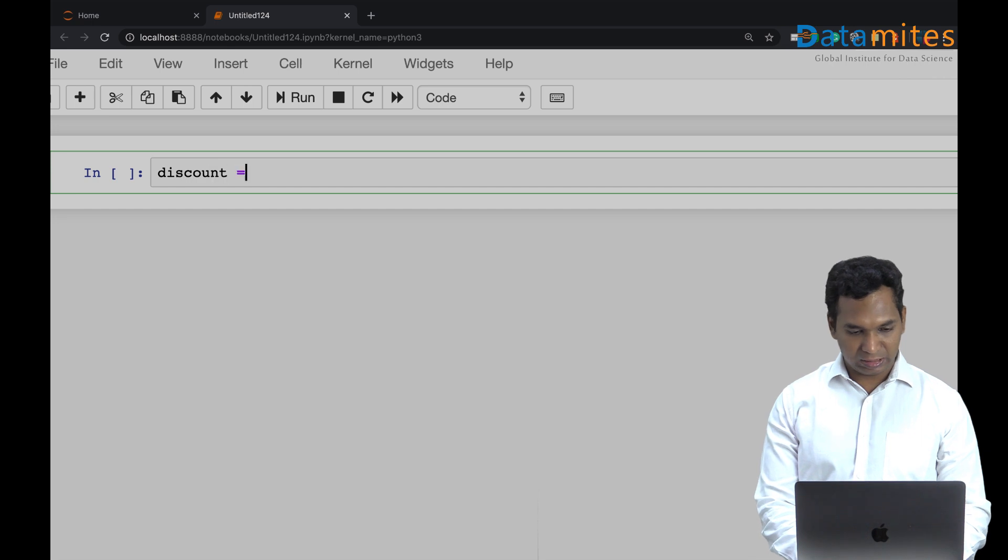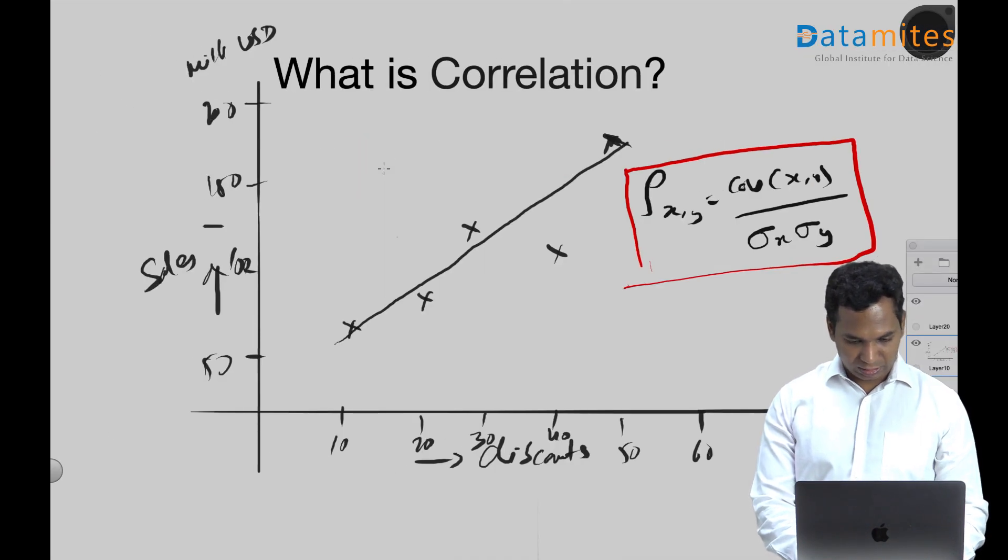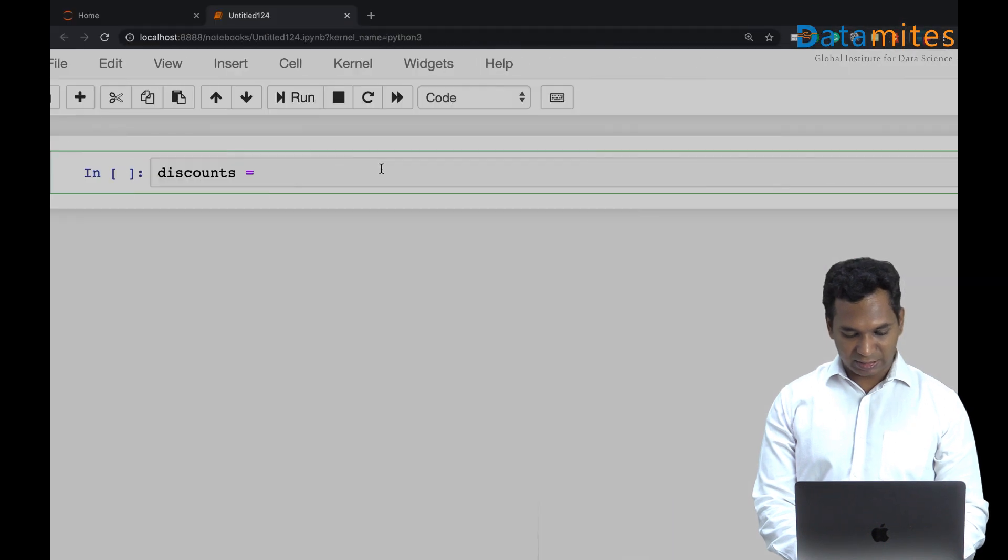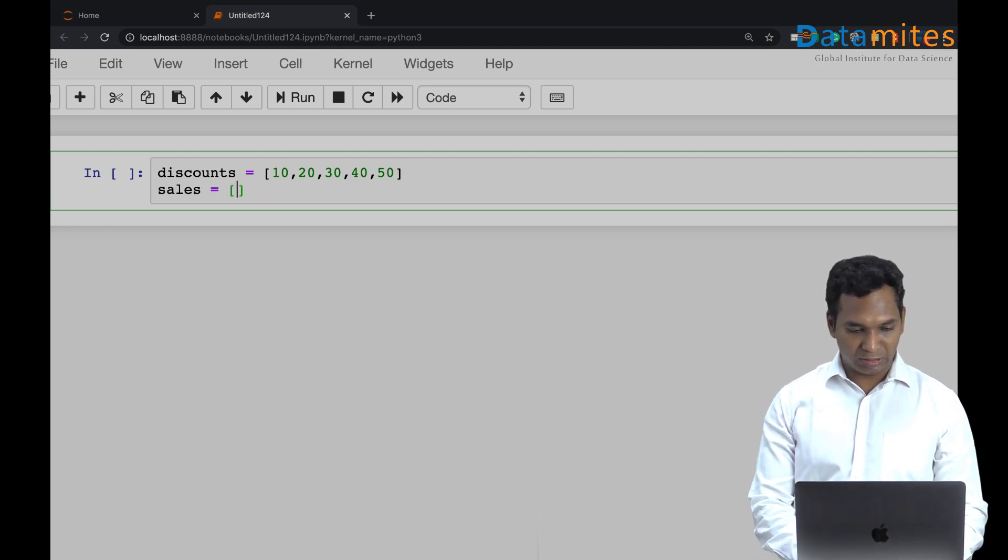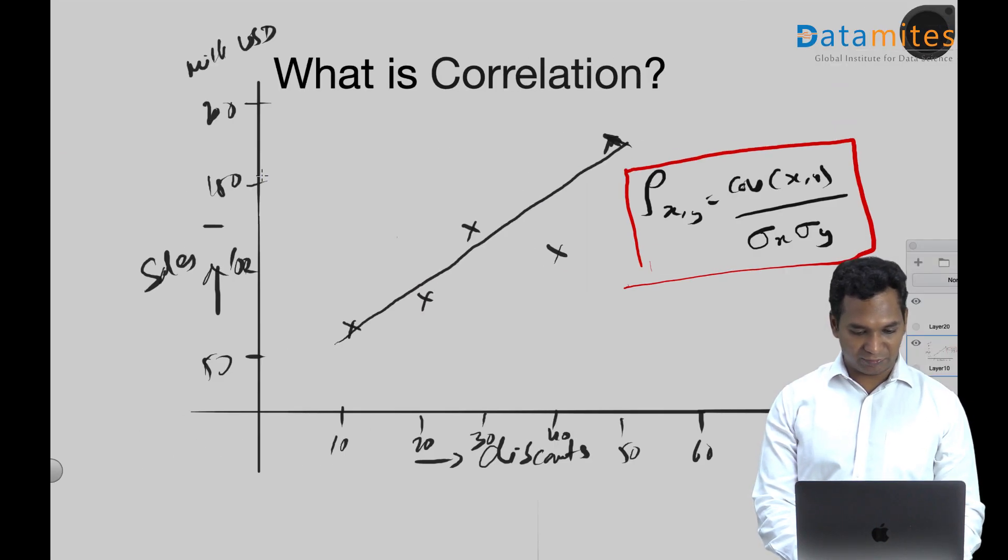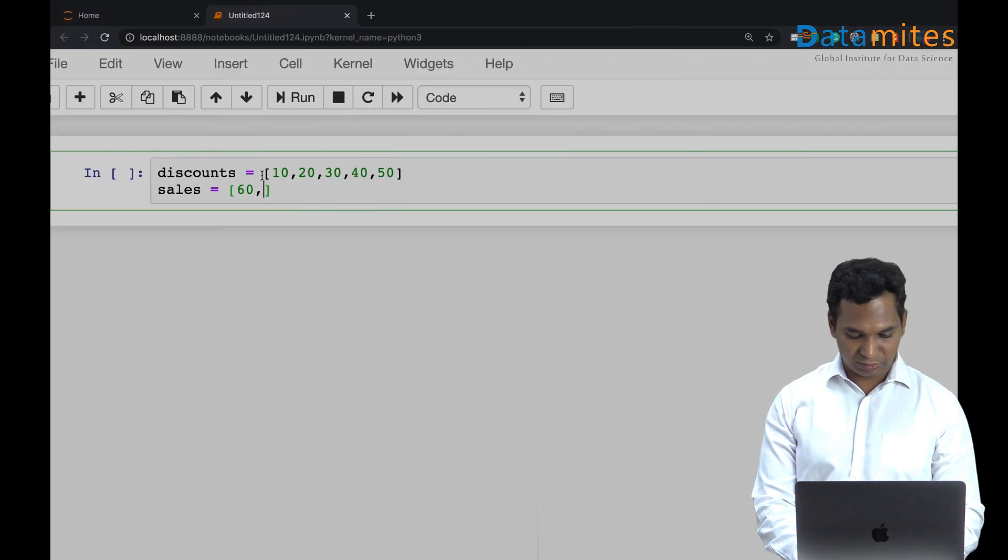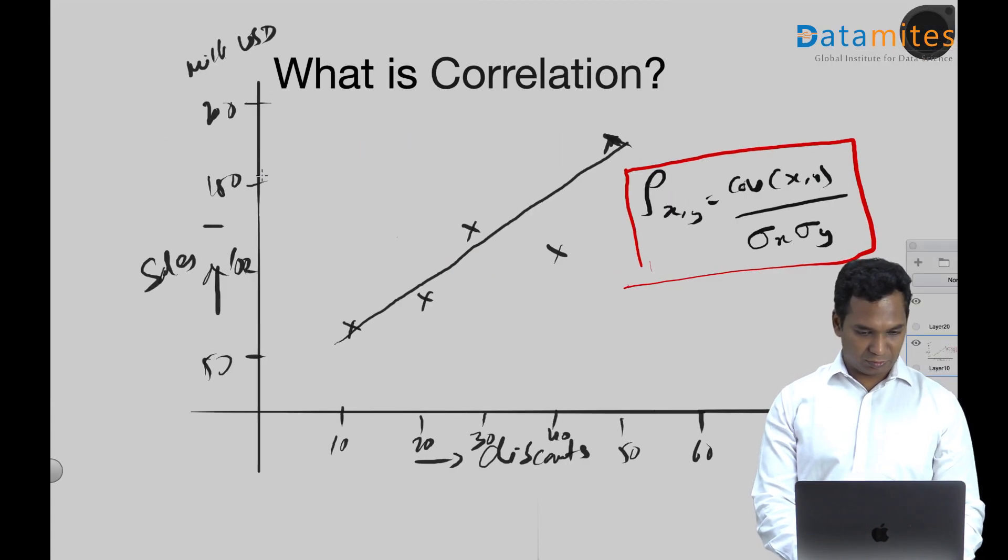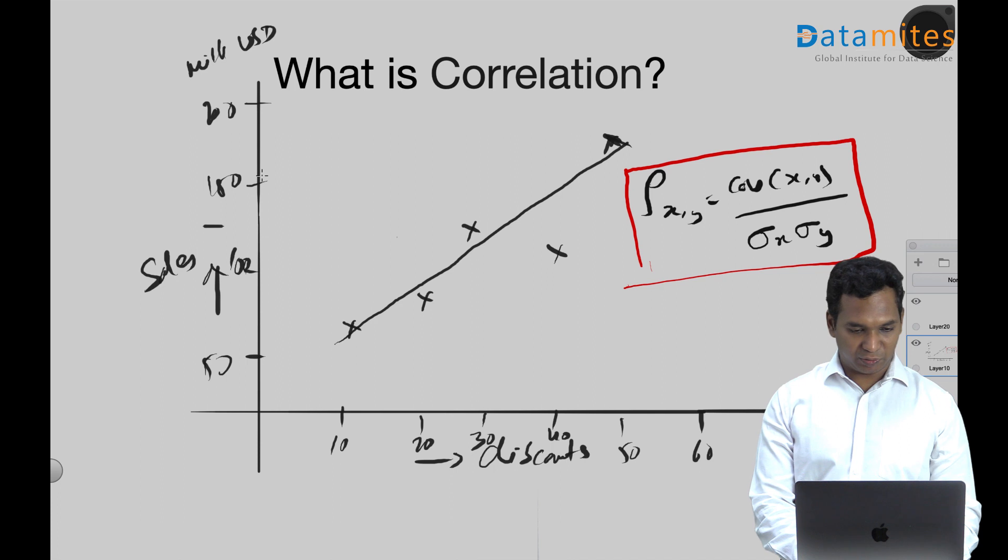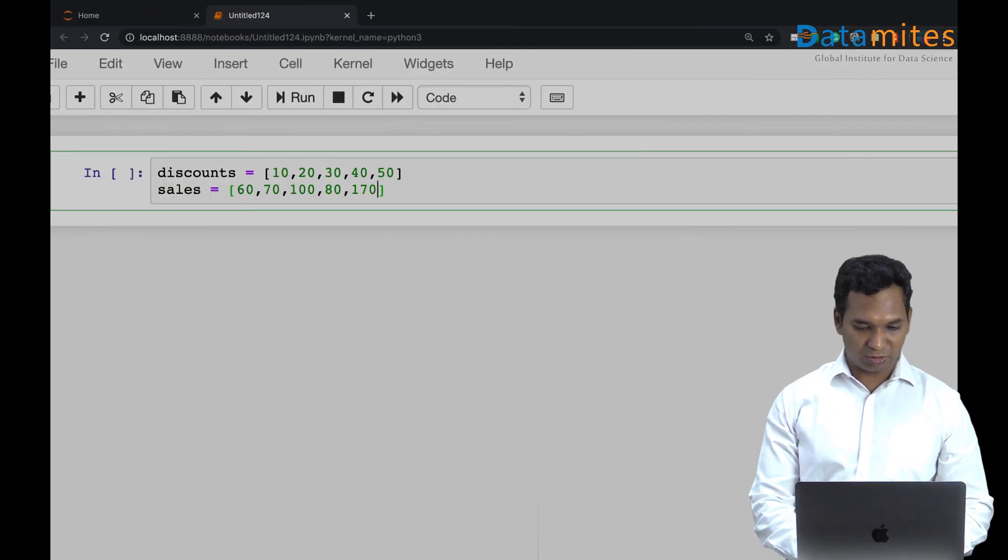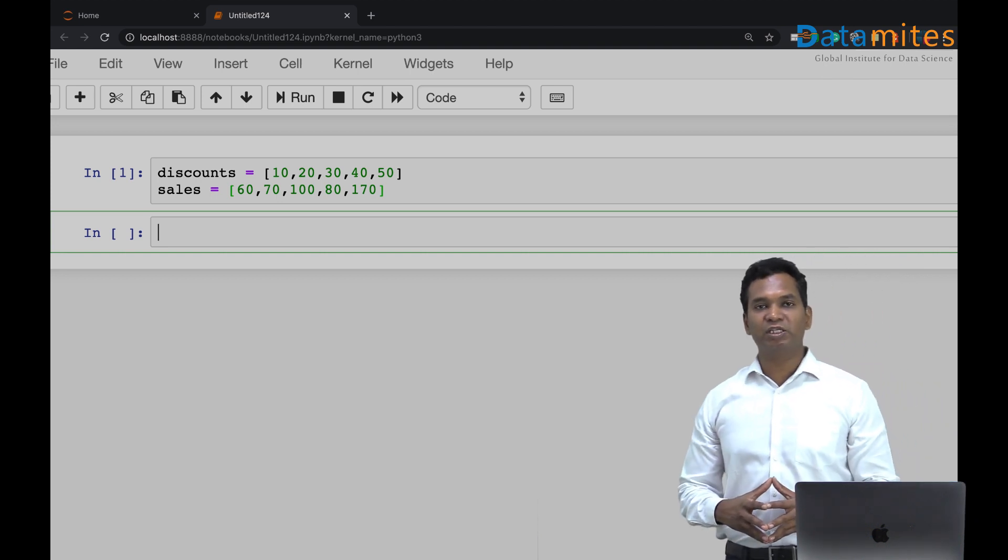So let's say discounts - 10% discount, 20% discount, 30% discount, 40% discount, 50% discount. And I'm going to just speculate the sales equals, given here, 60 million dollars, and then you have 70 million dollars, and then you have 100 million dollars, then somehow the sales is reduced at 40 and 50, you have 170 million dollars. So this is your sales figures.